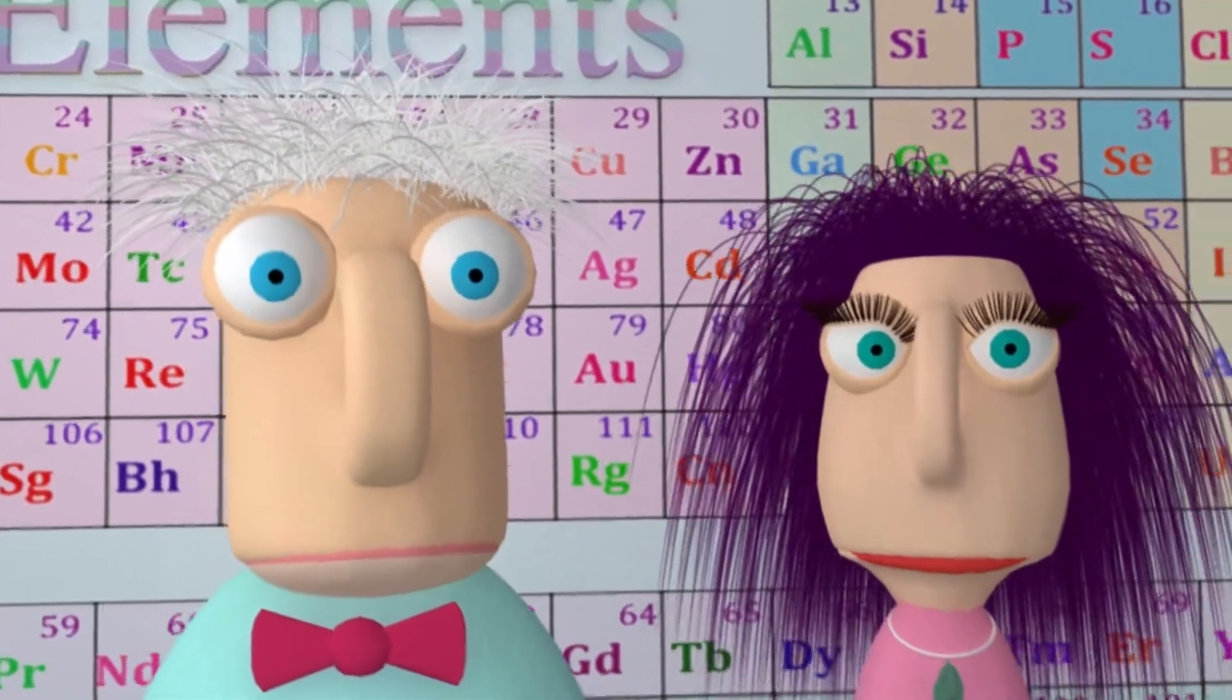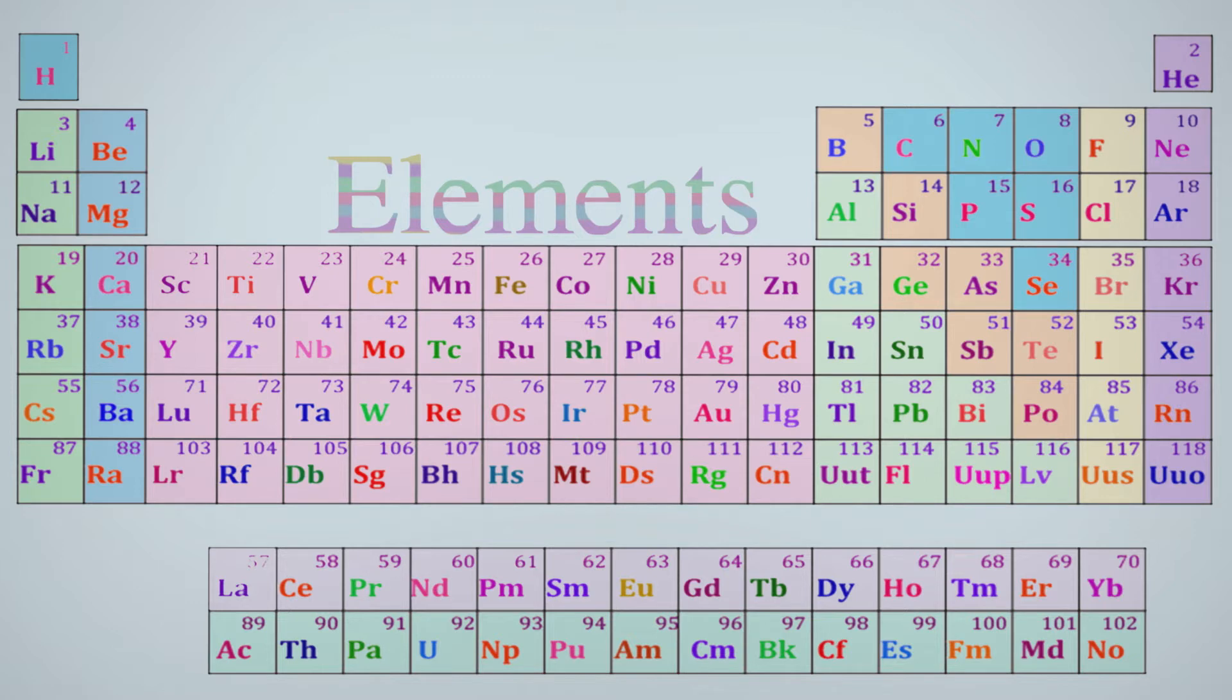Welcome to Mogul Science. Let's talk about beryllium. In the periodic table, beryllium is the fourth element after hydrogen, helium, and lithium.